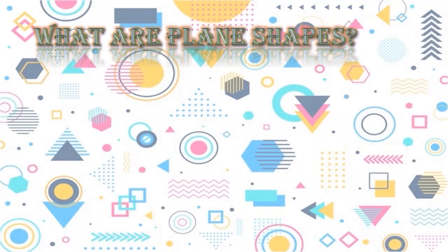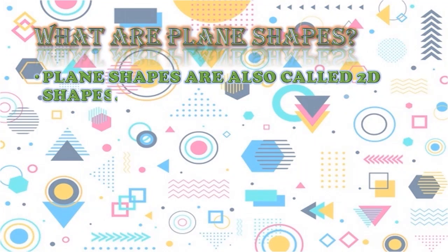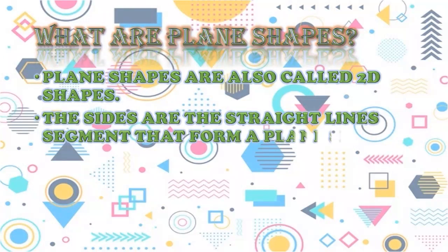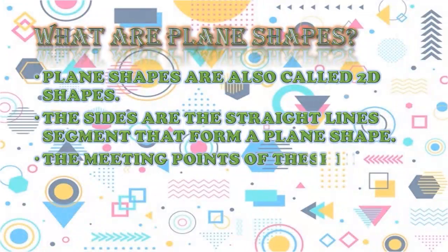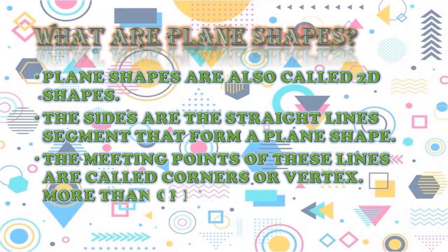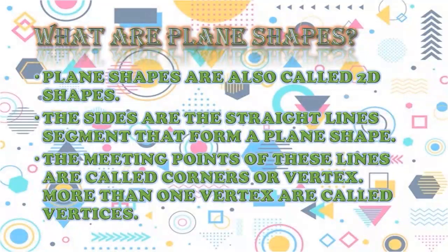What are Plane Shapes? Plane shapes are also called 2D or two-dimensional shapes. The sides are the straight line segments that form a plane shape. The meeting points of these lines are called corners or vertex. More than one vertex are called vertices.